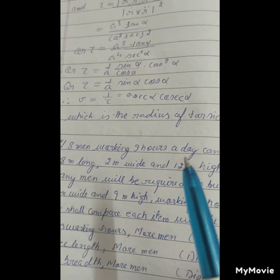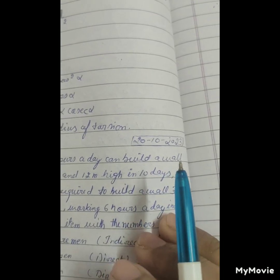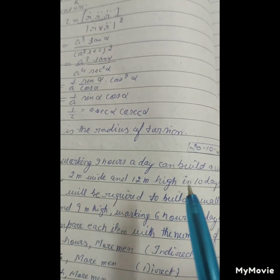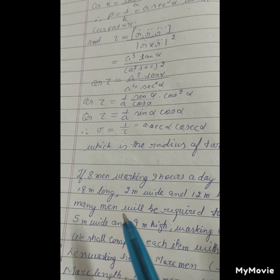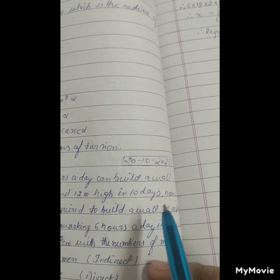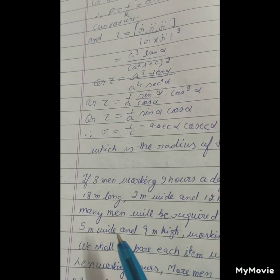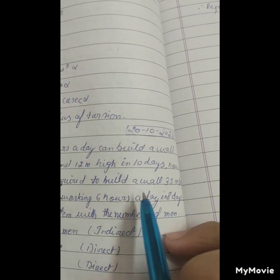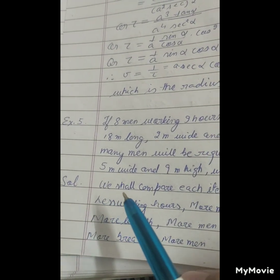If 8 men working 9 hours a day can build a wall 18m long, 2m wide and 12m high in 10 days, how many men will be required to build a wall 32m long, 5m wide and 9m high, working 6 hours a day in 8 days? Solution: